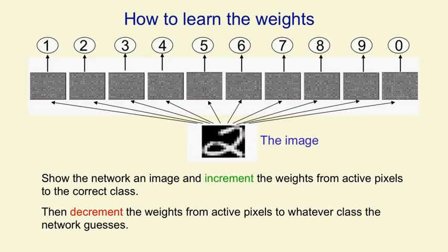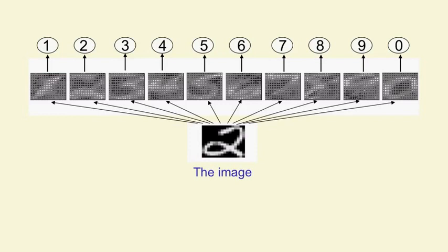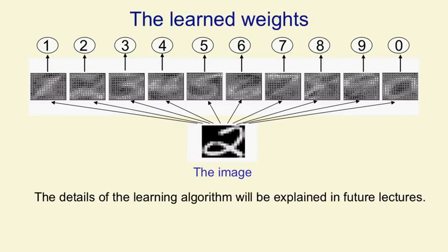So those are the initial weights. Now we're going to show it a few hundred training examples and then look at the weights again. And so now the weights have changed. They've started to form regular patterns and we show it a few more hundred examples and the weights have changed some more and a few more hundred examples and a few more hundred examples and a few more hundred and now the weights are pretty much at their final values.